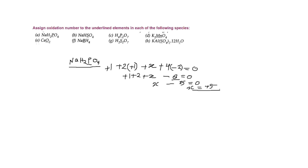This means that for the molecule NaH₂PO₄, the oxidation state of phosphorus is plus five. Similarly, we need to do the same for all the given molecules — calculate the oxidation state. The next given compound is NaHSO₄, and here we need to find the oxidation state of sulfur.